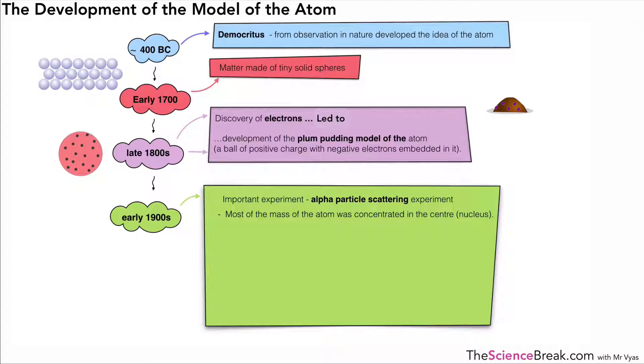That led to some very important conclusions about the structure of the atom. One of them was that most of the mass of the atom was concentrated in a center called the nucleus, and that the nucleus had its own charge which we now know is a positive charge.